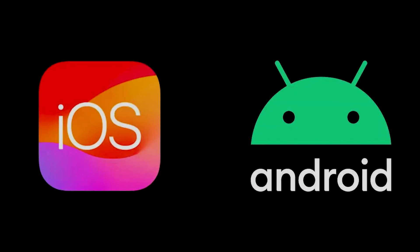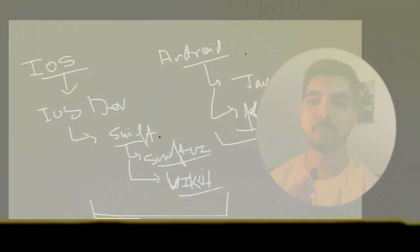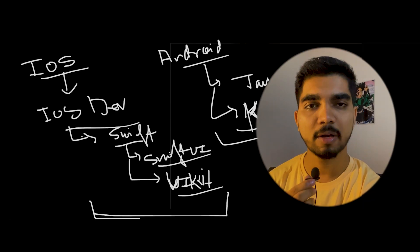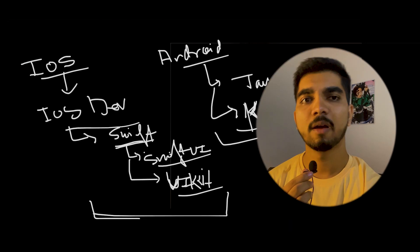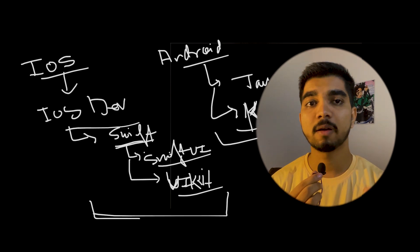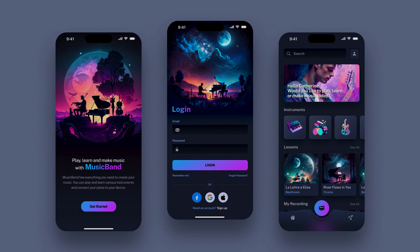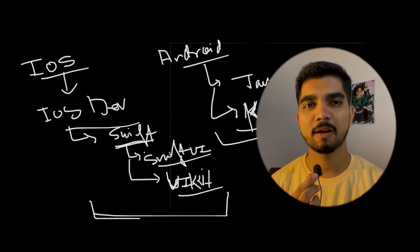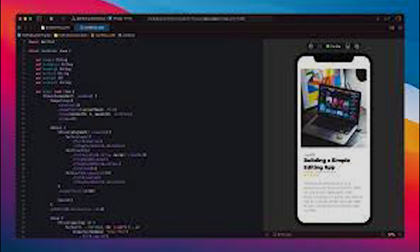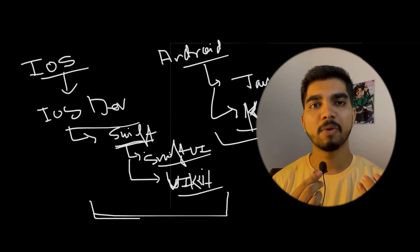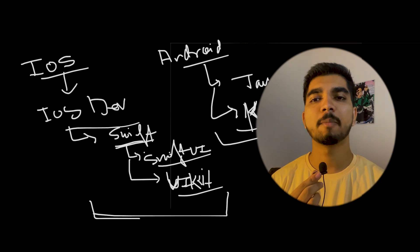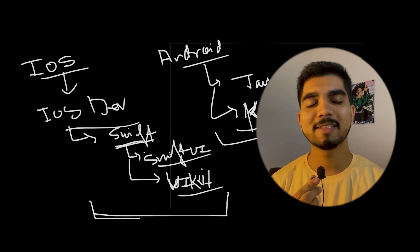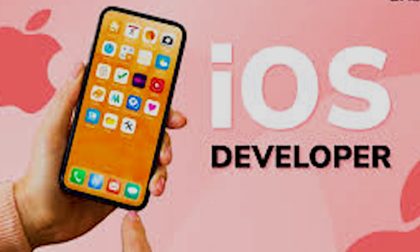Let's understand the different operating systems in mobile application development. First is iOS, where the programming language is Swift. You just need to learn Swift, and then for making UI interfaces and designs you would use a framework — that is SwiftUI and UIKit. SwiftUI is a newer framework launched around 2018, while UIKit is an older, widely used framework. Most companies have been using UIKit but are now slowly starting to migrate to SwiftUI.